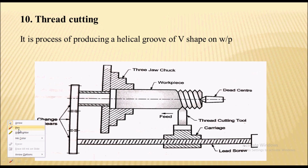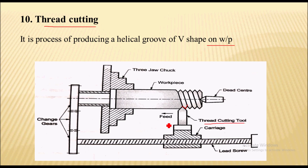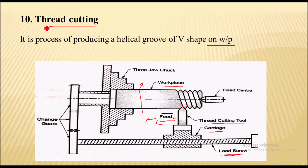The last operation is thread cutting, which is also performed on the lathe machine. A special thread cutting tool is used, and it is a process of producing a helical groove on the workpiece surface. In this operation the tool moves parallel to the axis of the workpiece. For one rotation of the workpiece, the distance traveled by the tool equals the pitch of the thread created. The linear motion of the tool and the rotary motion of the workpiece are synchronized by engaging the lead screw with the carriage. That is all about lathe machine operations — hope you liked this video, thank you for watching.